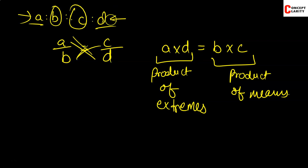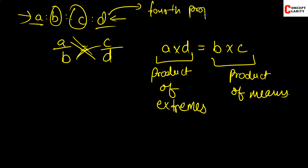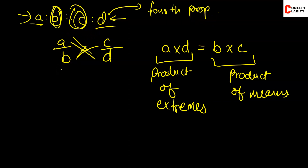In this normal proportion, D is called the fourth proportion. If we go for the technical term in mathematics, it is known as the fourth proportion. The middle term B or C is called the mean proportion — it is the simple in-between value.